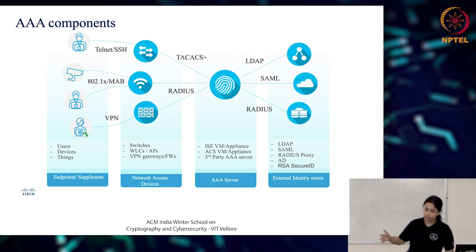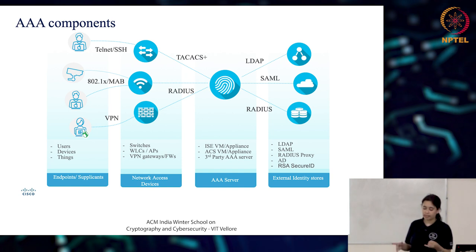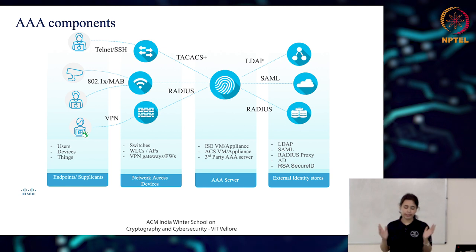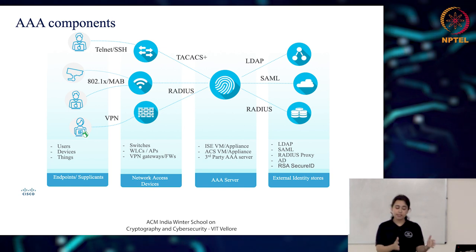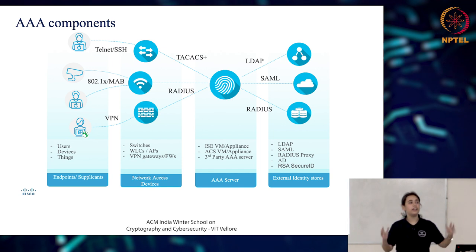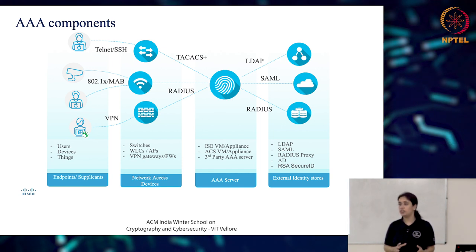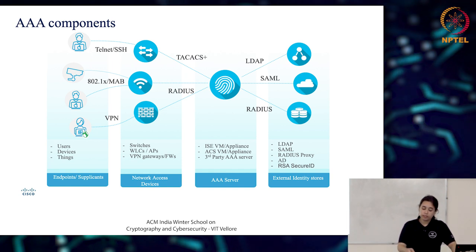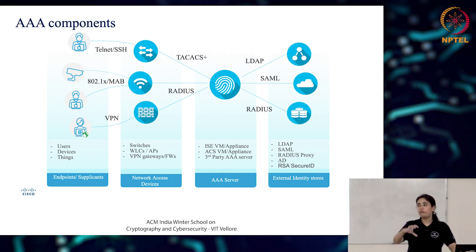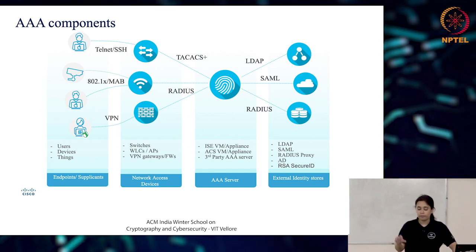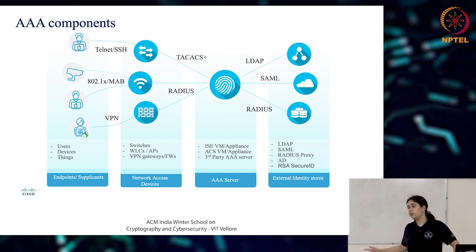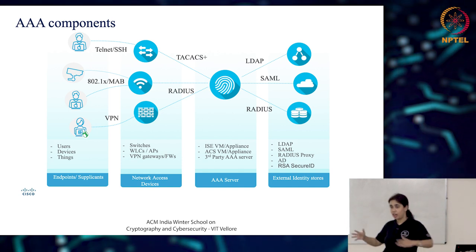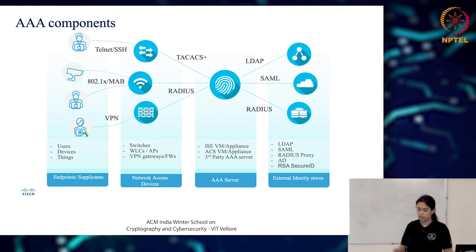The second component is Network Access Devices, or NADs. This can be a switch, WLC, VPN gateway, firewall — anything can be a network access device. This is the device that formulates the RADIUS packet based on the endpoint's information and communicates with ISE. The NAD formulates the RADIUS or TACACS packet and talks to the AAA server, which in this case can be an ISE virtual machine, an ISE hardware box, or another AAA server.